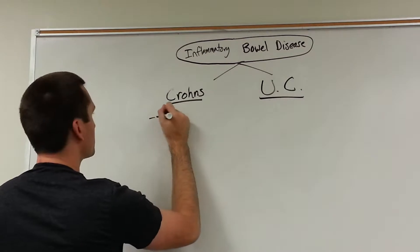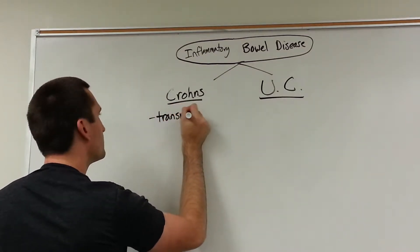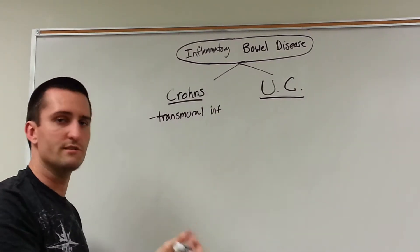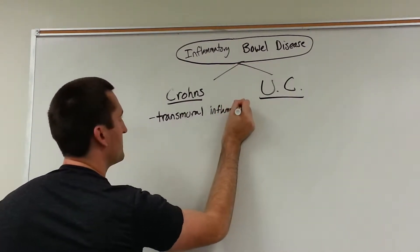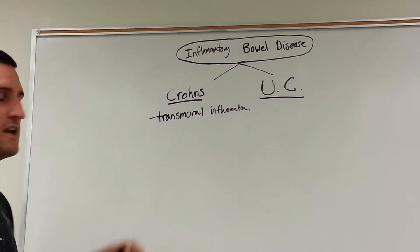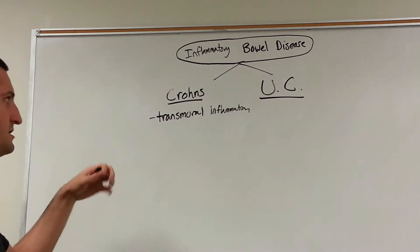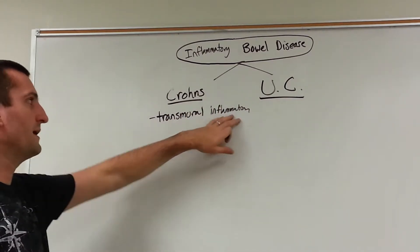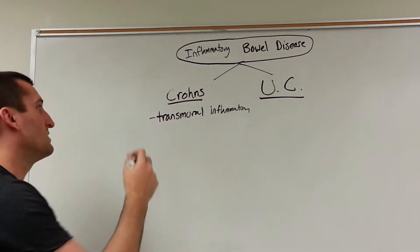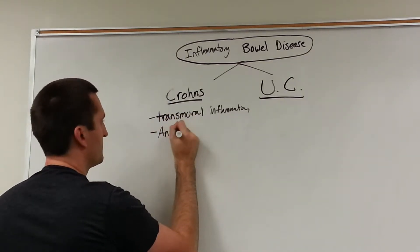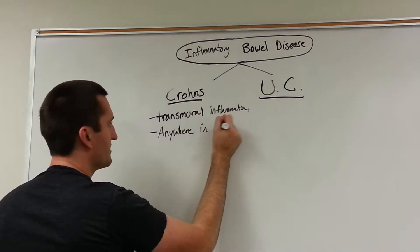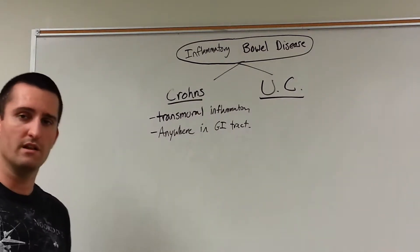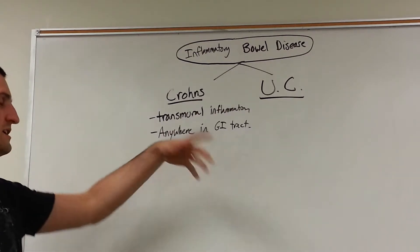Crohn's, simply put, is transmural inflammation. What does transmural inflammation mean? It means we're going to have mucosal inflammation, muscular layer inflammation, and the outside covering layer inflammation — the serosal inflammation of the colon. Crohn's can really affect anywhere in the GI tract. Typically it's located in the colon; however, you're going to see small bowel involvement, even stomach involvement — it's going to be anywhere in the GI tract.